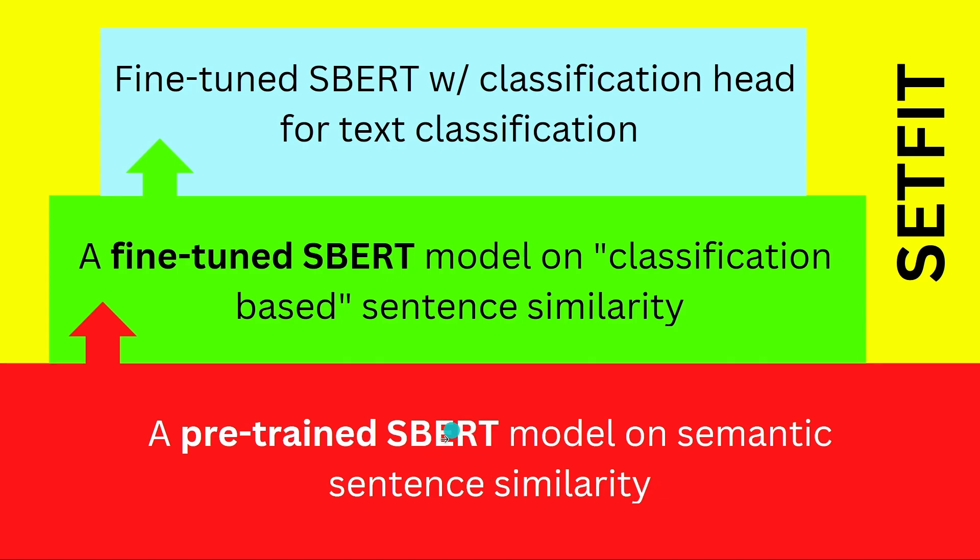Now we take this SBERT model, we construct our training data set, and with this training data set, we fine-tune now this model that we take here, and we fine-tune it now with the training data set, we let it run for a certain amount of time, and we get an advanced SBERT system where the weights have changed. And now we have a fine-tuned SBERT model on classification-based sentence similarity.